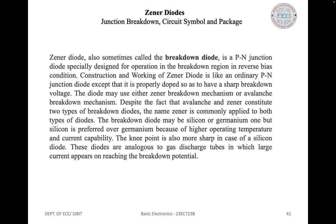In cases where the depletion region is too wide for zener breakdown, the electrons in the reverse saturation current can be given sufficient energy to cause other electrons to break free when they strike atoms within the depletion region. This is termed ionization by collision. The electrons released in this way collide with other atoms to produce more free electrons in an avalanche effect. Avalanche breakdown is normally produced by reverse voltage levels above 5 volts.